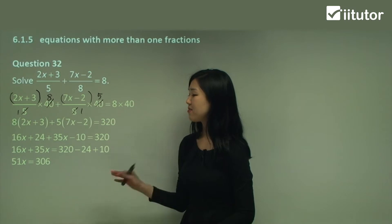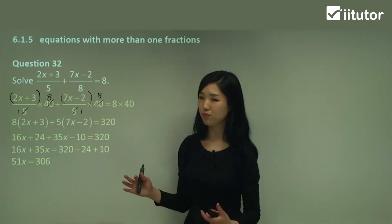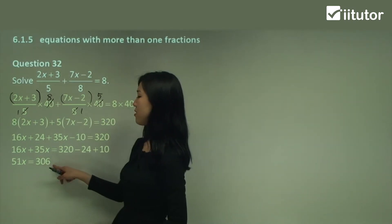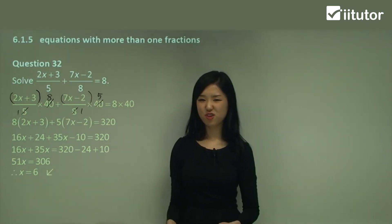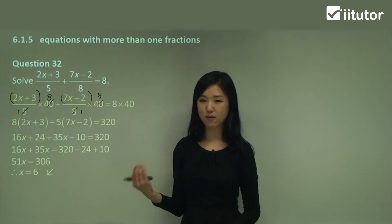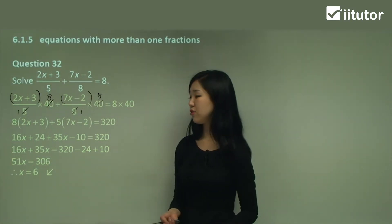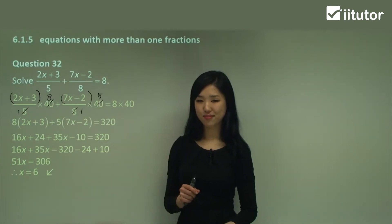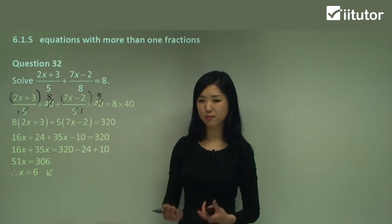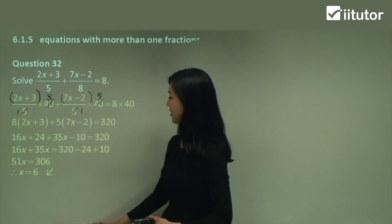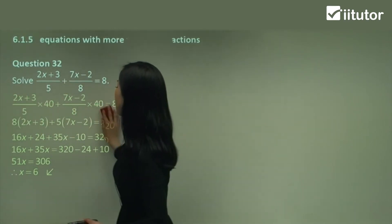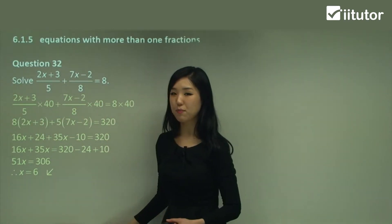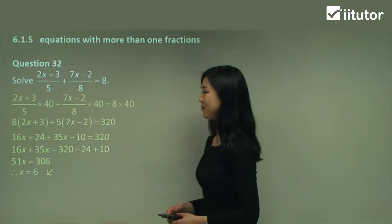Then divide both sides by 51 — or you can think of it as 306 divided by 51, which is 6. You can do some extra calculations if needed to work out that last step. The key thing is to multiply everything by the lowest common multiple.